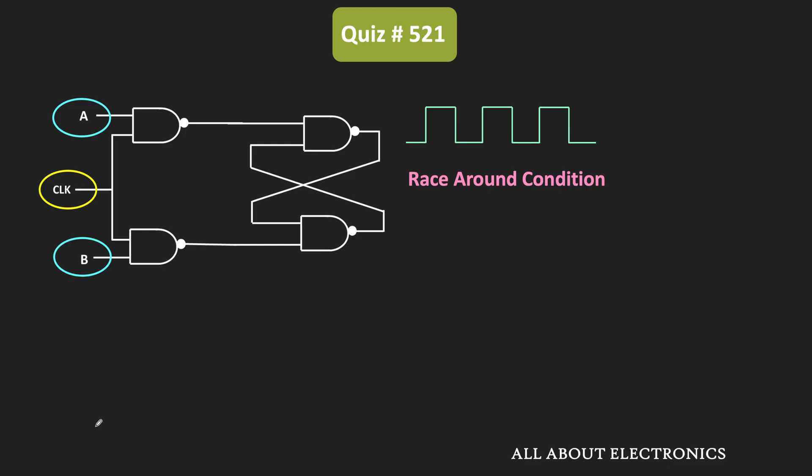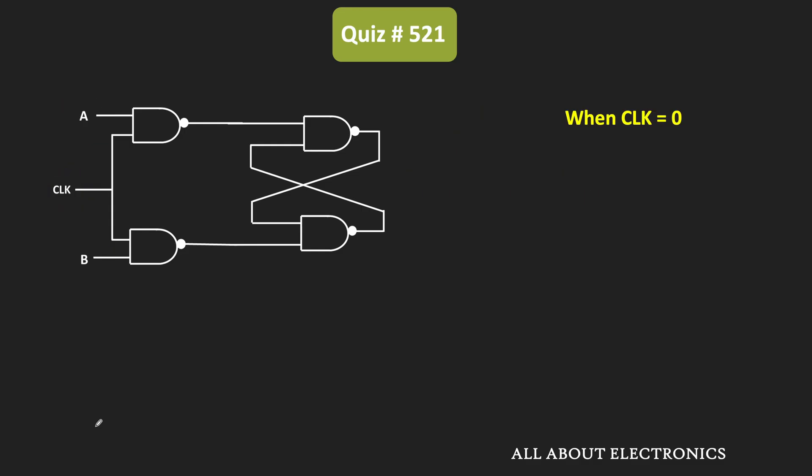We will go through each option and see whether the race around condition is happening or not. First, we will see the condition whenever the clock signal is zero. If you recognize this circuit, it is basically a gated SR latch, in which case you already know the race around condition won't occur. But let's analyze it anyway.